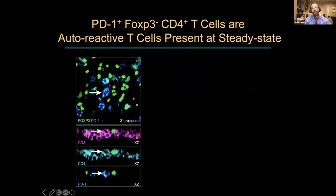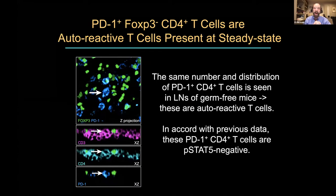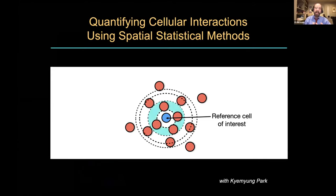So we understood what Tregs don't do — they don't prevent the activation of autoreactive cells — but that left open the question of how you avoid autoimmunity. Harry moved away from identifying autoreactive cells by IL-2, which is difficult, and showed that PD-1 expression is actually a very good way to characterize autoreactive cells in the steady state. These PD-1 positive, FOXP3 negative CD4 T cells are present in the same place and in the same number in skin-draining lymph nodes of germ-free mice — no food antigens, no known exogenous antigens — suggesting autoreactivity. And consistent with our earlier data, these PD-1 positive cells are typically P-STAT-5 negative.